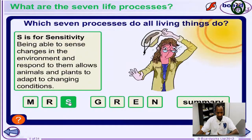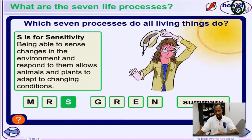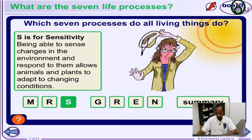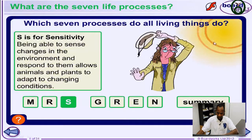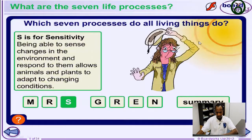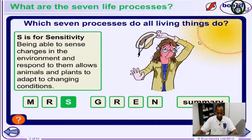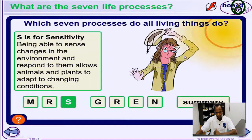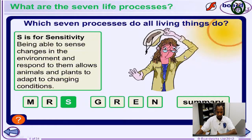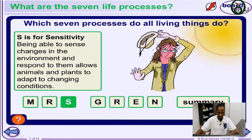Then, sensitivity. All living things respond to external stimuli. For example, you can see a species responding to direct heat from the sun. If you take a needle to touch your skin, you react to it immediately because you're very sensitive to it.